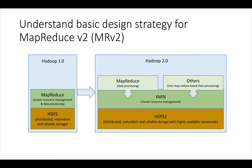The basic strategy for MapReduce 2 is that it limits itself to data processing. On top of that, MapReduce 2 has a component called the job history server. Once a job is submitted and completed, to track the details of completed jobs, you need to have this job history server up and running.